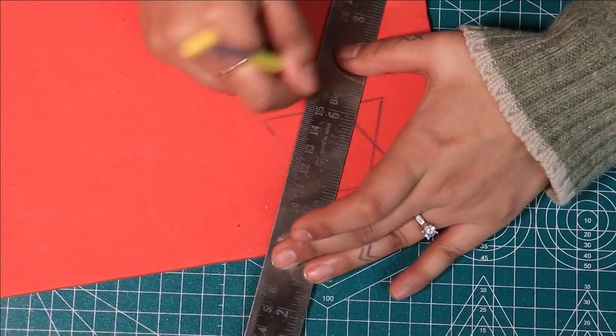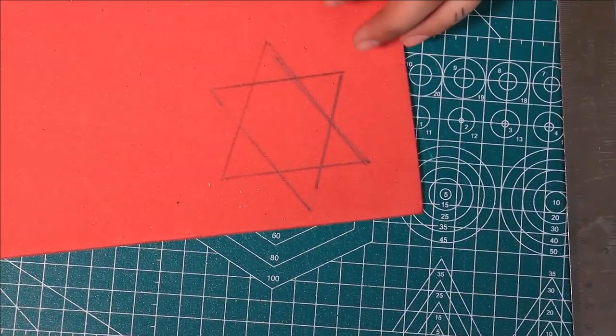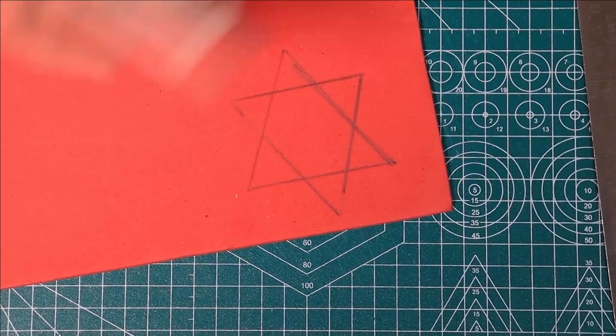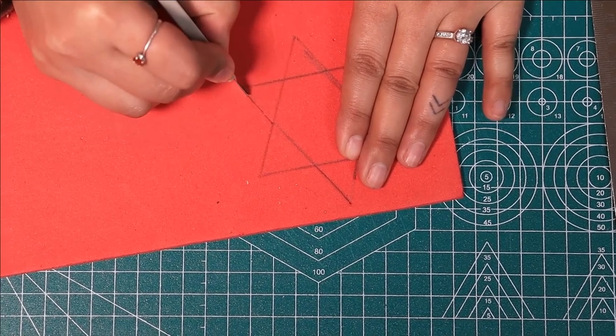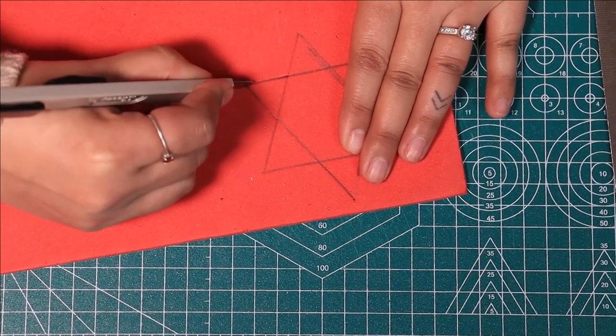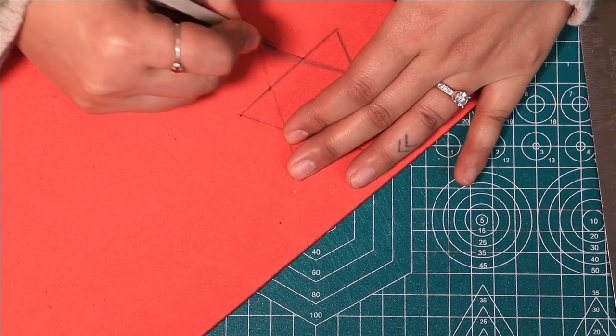This way you will get a nice six-pointed star. Cut it using the paper cutter and use it as a stencil to cut all other stars.